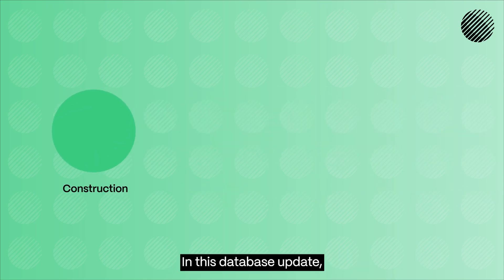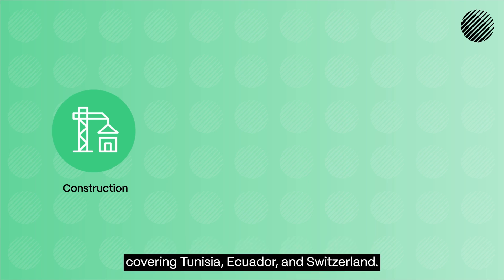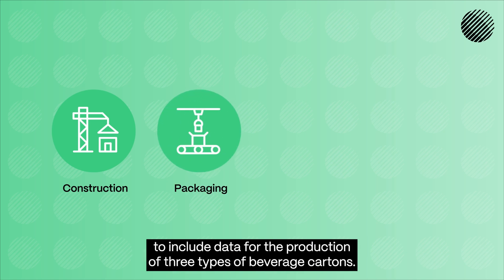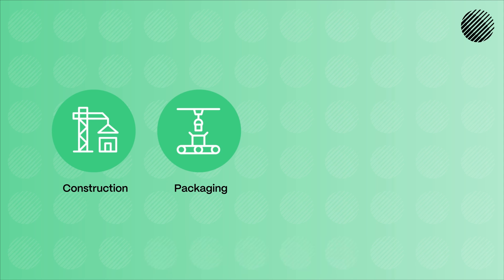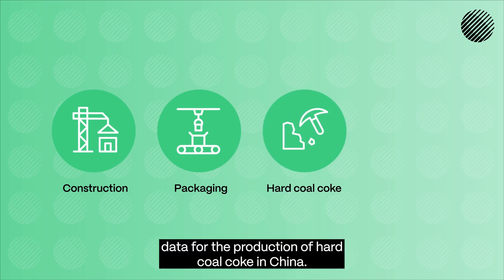In this database update, regionalized data for various construction materials has been added, covering Tunisia, Ecuador, and Switzerland. We've also expanded our database in the packaging sector to include data for the production of three types of beverage cartons. Additionally, Version 3.10 introduces data for the production of hard coal coke in China.